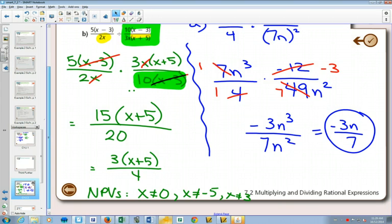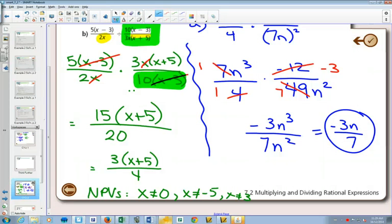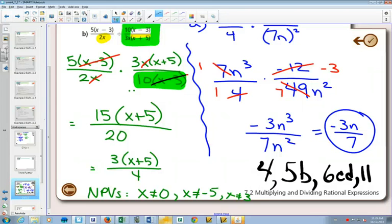So questions you can do for this one are 4, 5B, 6C and D, and 11B. Those are for A and B. So those are the questions you can do for both of those parts.